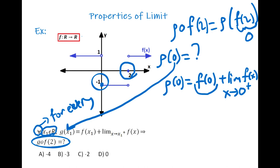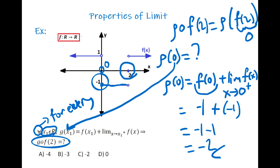From the graph, f(0) = −1 (closed/shaded point), and the limit of f(x) as x→0 from the right is also −1. So g(0) = −1 + (−1) = negative 2.